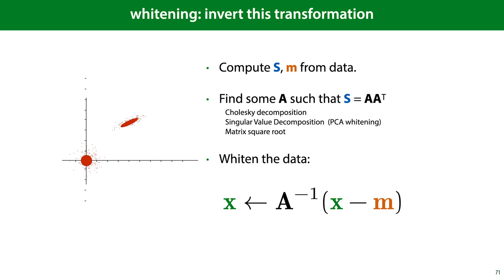The way to do that is to estimate the covariance matrix and the mean from the data to find some A. We saw that the covariance after transformation is A times A transposed, so if we estimate the covariance S and find some matrix A such that A times A transposed equals S, we can use that A for the inverse transformation. Since the multiplication by A doesn't change the mean, the translation vector T equals the mean M. Once we know A and T, we reverse the transformation: first subtract the translation vector, then multiply by the inverse of A.